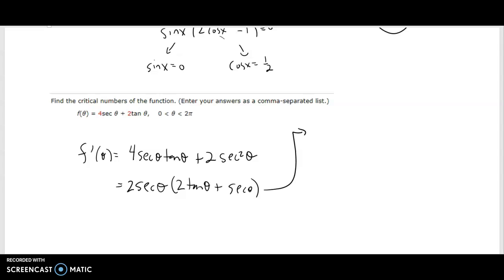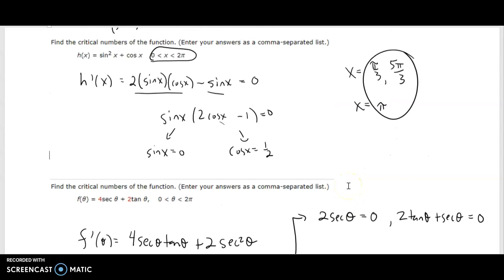This one's a little more complicated. I use my zero product principle. Where does the secant of theta equal 0? And where does this thing equal 0? Or, of course, where is it undefined? We should also consider that, because the tangent and the secant can be undefined.